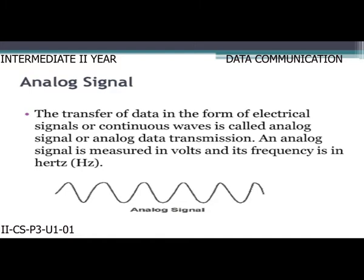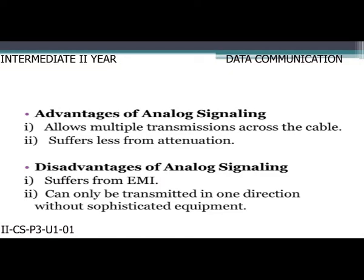An analog signal is the transfer of data in the form of electrical signals or continuous waves. An analog signal is measured in volts and its frequency is in hertz. Advantages of analog signaling: it allows multiple transmissions across the cable and suffers less from attenuation, which means reduction of force or effect. Disadvantages: it suffers from EMI (electromagnetic interference) and can only be transmitted in one direction without sophisticated equipment.